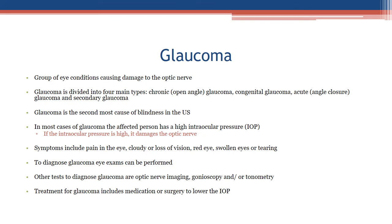Glaucoma — a group of eye conditions causing damage to the optic nerve: divided into four main types: chronic open-angle glaucoma, congenital glaucoma, acute angle-closure glaucoma, and secondary glaucoma. Glaucoma is the second most common cause of blindness in the U.S. In most cases, the affected person has high intraocular pressure (IOP), which damages the optic nerve. Symptoms include eye pain, cloudy or loss of vision, red eyes, swollen eyes, or tearing. Diagnosis involves eye exams, optic nerve imaging, gonioscopy, and tonometry. Treatment includes medication or surgery to lower eye pressure.